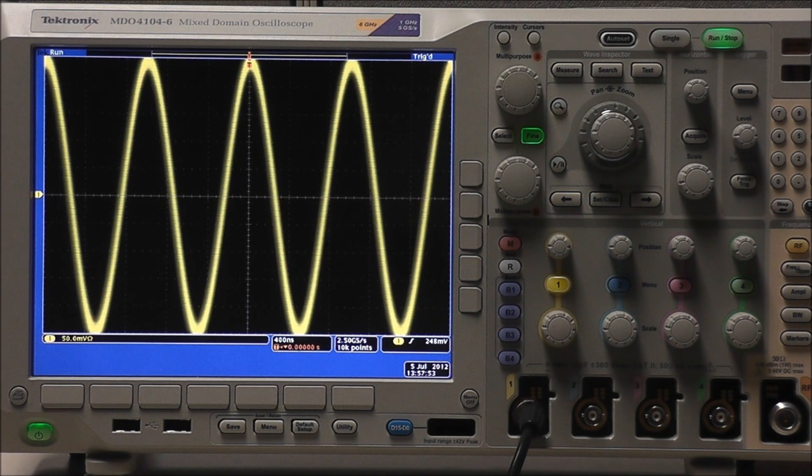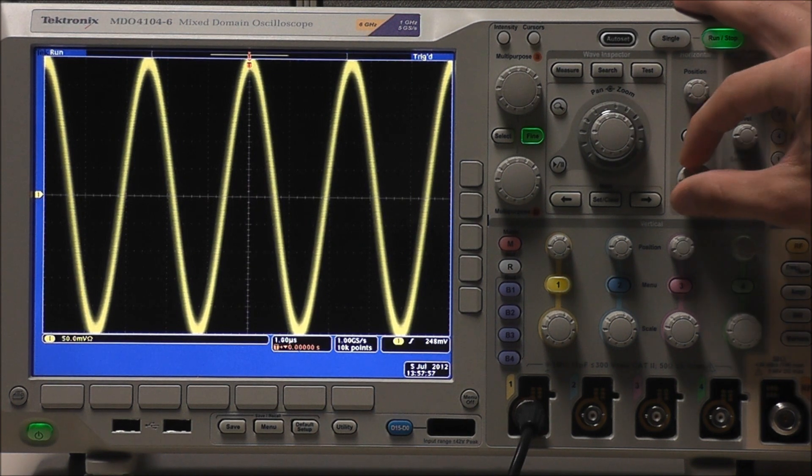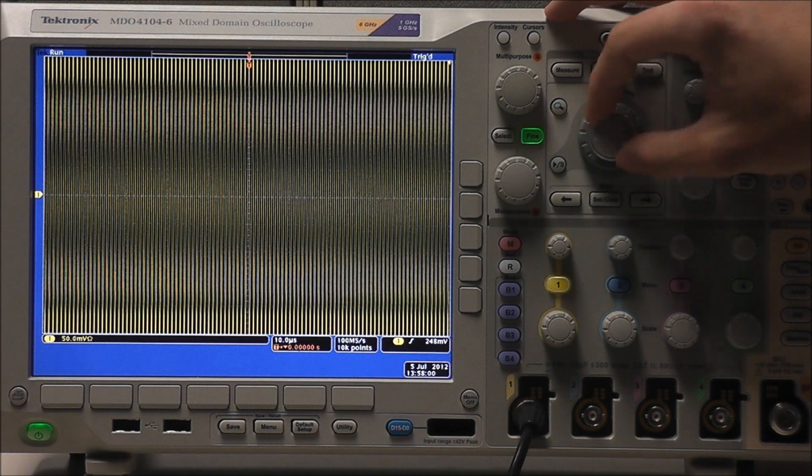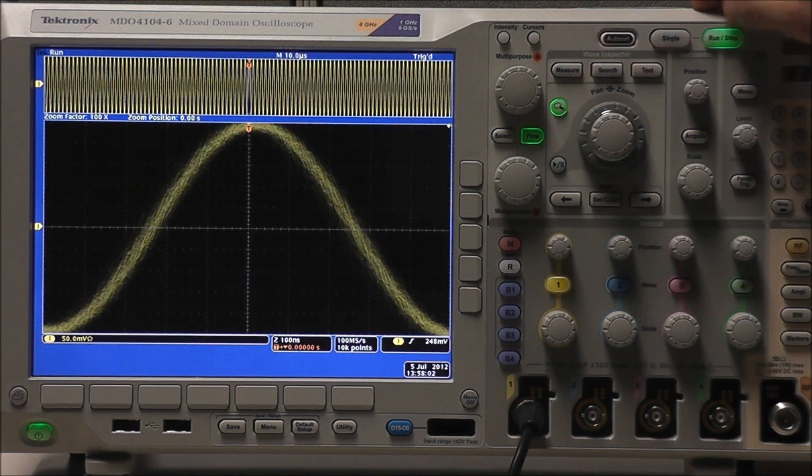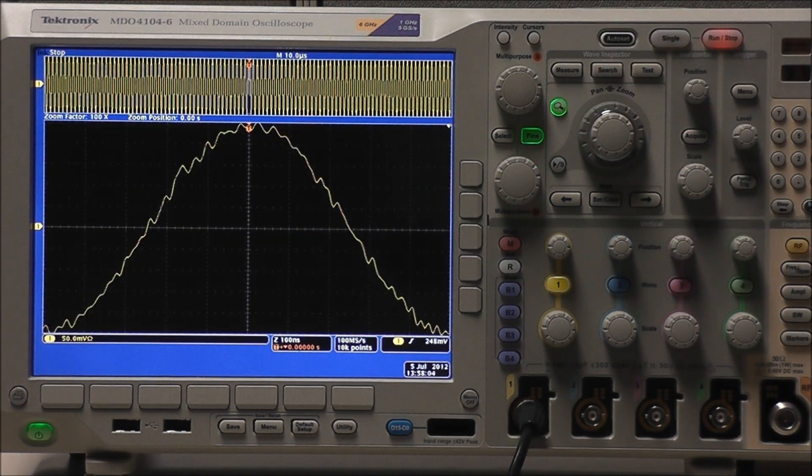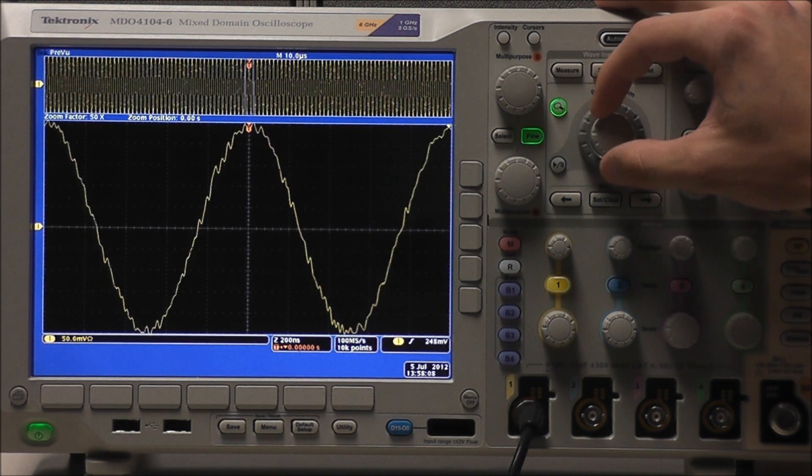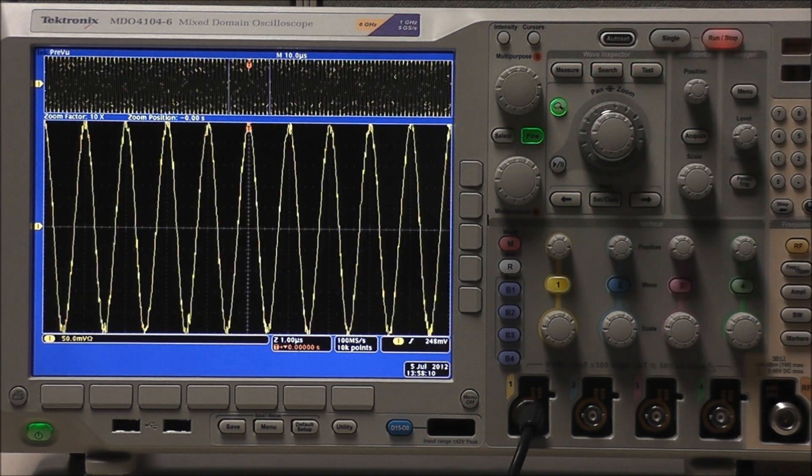Another effective way to reduce noise is by reducing the sample rate which acts as a digital filter. So we will scale out until we're at 100 mega samples per second. Zoom in as far as we can and select single acquisition and we can see how noisy our signal is. And if we zoom back out just a little bit we can still see the noise and we're doing this just because when we decrease the record length by an order of magnitude we're also going to be decreasing how far we can zoom in by an order of magnitude.